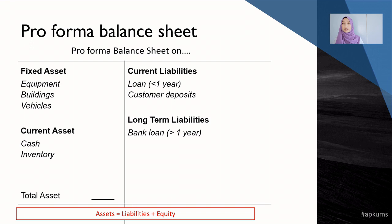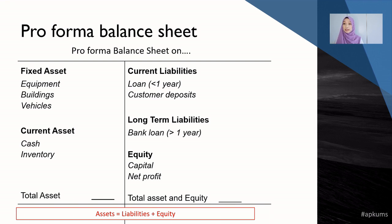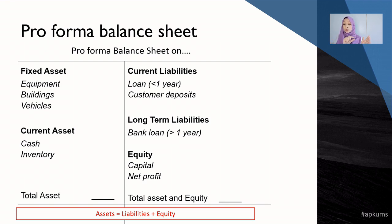Equity is what you owe to your shareholders — what your shareholders will receive from the business. This includes the capital they invested and the net profit from the business. On the right side of the balance sheet, you have liabilities plus equity. The fundamental balance sheet formula is: Assets = Liabilities + Equity. This is what makes the balance sheet balance.